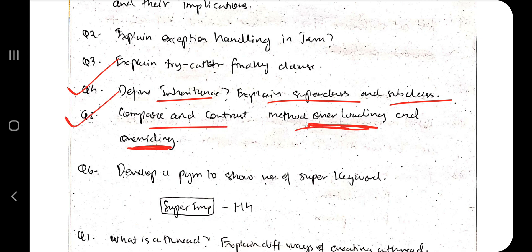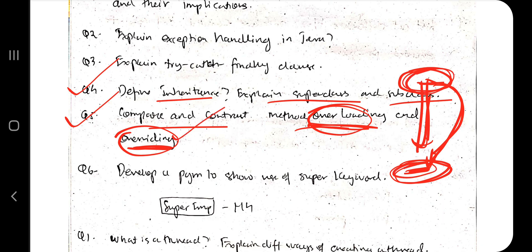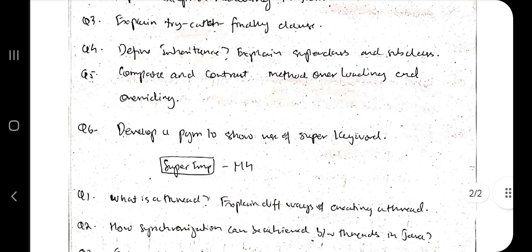Overloading comes under polymorphism — you are using the same function in two different contexts, which is polymorphism. Overriding, on the other hand, is in inheritance: you inherit a class from another class, and if there is a function defined in the parent, you edit that function in the subclass — that is called overriding. If you remember this distinction, fifty percent of the task is done.